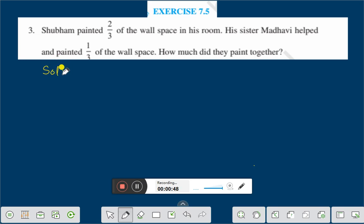Here you see Shubham painted 2/3 of the wall and Madhavi helped and painted 1/3 of the wall. That means you have to add the fractions to get how much they paint together.